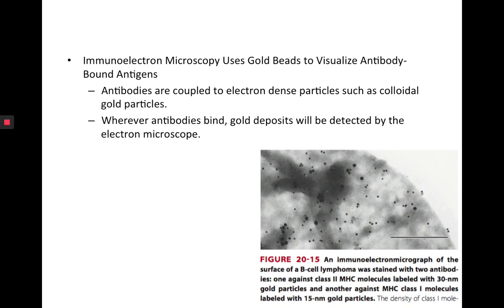A variation of this is using antibodies bound to gold beads. When you bind them to a heavy metal like gold, you can use it as staining for the electron microscope. Where the antibodies bind, you see very dark gold deposits. For example, an immuno-electron micrograph of a B-cell lymphoma can be stained with two antibodies: one against MHC class II labeled with a 30 nm gold particle, and another against MHC class I labeled with a 50 nm gold particle — the difference in sizes indicates what each antibody is binding.